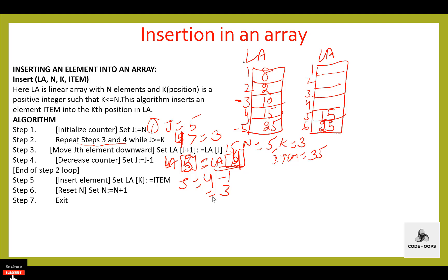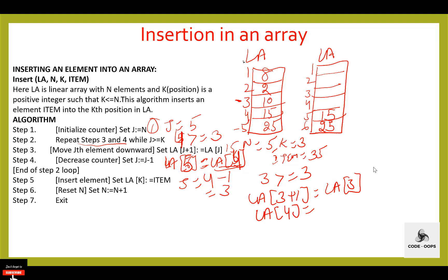Now j becomes 3. Control transfers back to step 2. Repeat steps 3 and 4 while j is greater than or equal to k. Now j is 3, and 3 is greater than or equal to 3, so the condition is true. Move the jth element downwards: set LA of j plus 1 — j is 3 — equal to LA of j. LA of 4 equals LA of 3. The element at index 3 is 10, so LA of 4 becomes 10. Then decrease j by 1: j becomes 2.